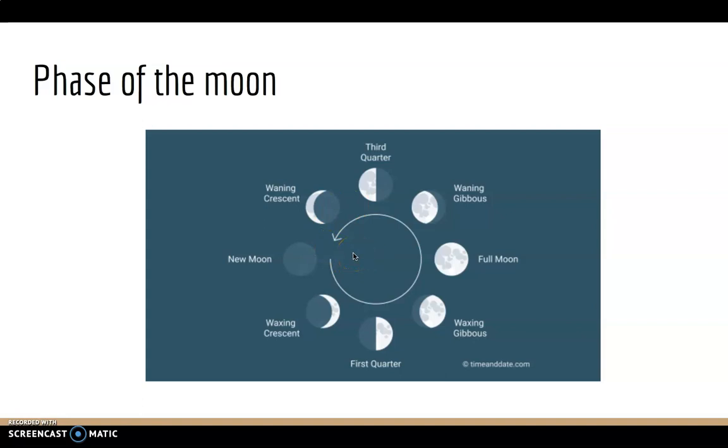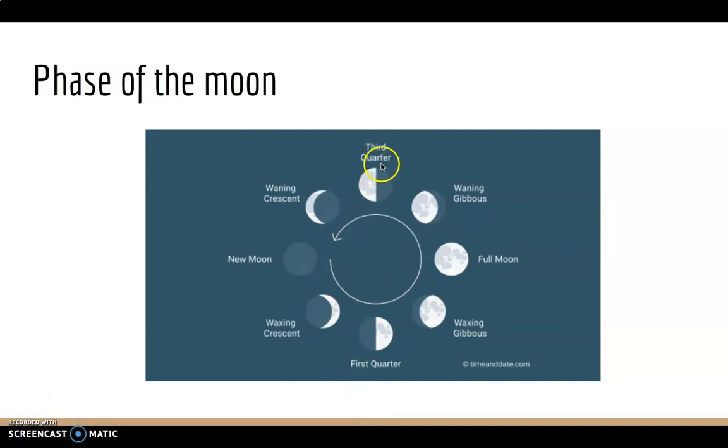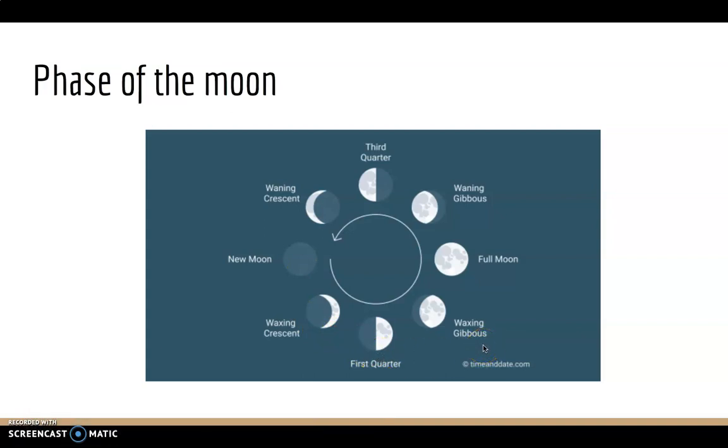The Moon only has one shape, but the sunlight makes it look like this. So as you can see, we have third quarter, waning crescent, new moon, waxing crescent, first quarter, waxing gibbous, full moon, and waning gibbous, which is so cool, right?